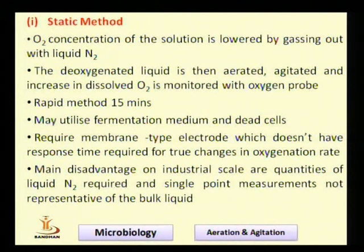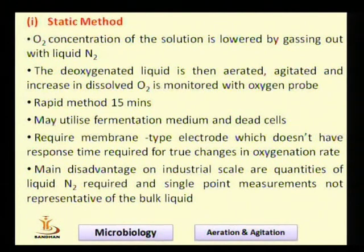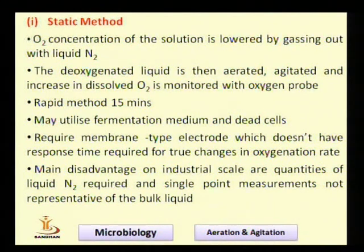In the dynamic method, not only fermentation broth but also the organisms present in the medium are used. The respiratory activity of the organisms is used to lower the oxygen concentration to a minimum level. Although these methods are more costly than the sulfite oxidation method, they are widely used because the actual fermentation system is employed. A major disadvantage is that the electrode used can display a time lag between measurement and display of the estimated value.